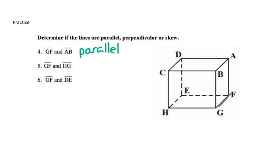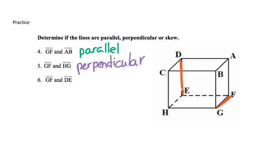GF and HG meet in the corner forming a right angle, so this would be perpendicular. GF and DE — one is going up and down, the other is going left or right, so that would be skew.